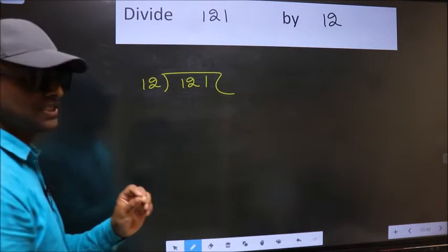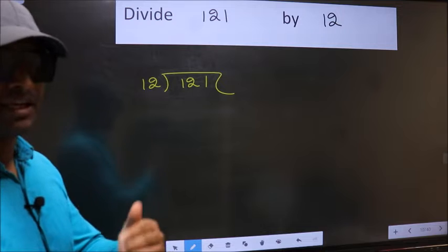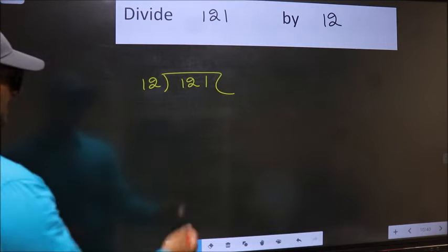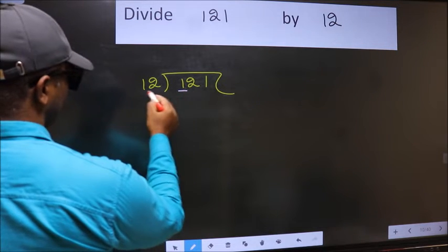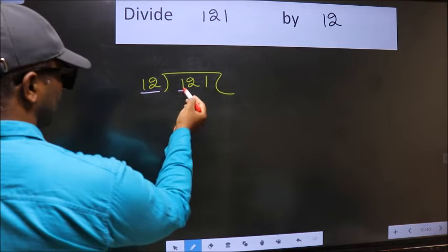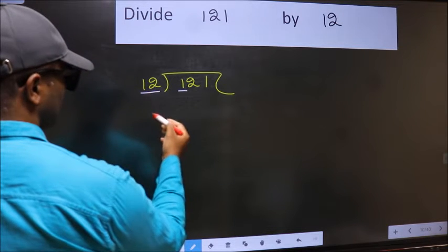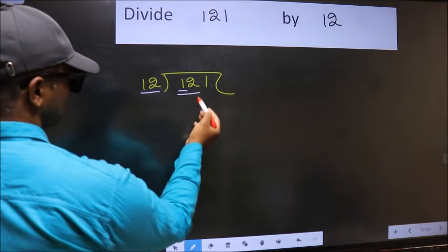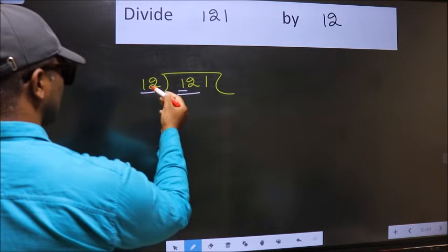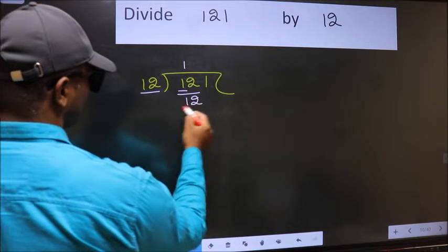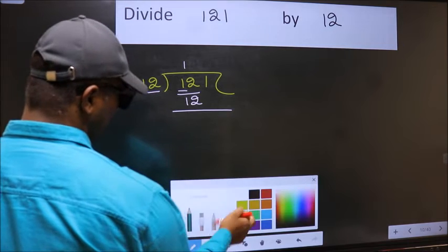This is your step 1. Next, here we have 1 and here 12. 1 is smaller than 12, so we should take two numbers. 12, when do we get 12 in 12 table? 12 once 12. Now we should subtract.